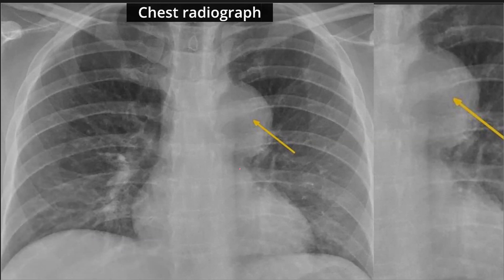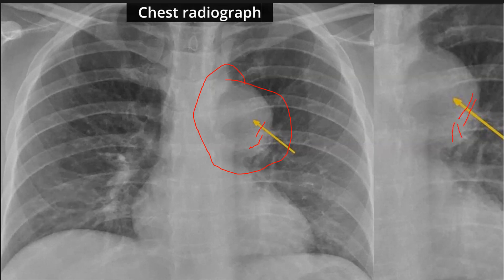As we see here, this is the mass lesion. We can see some vessels passing through the mass, as shown in the magnified view. Because the hilar vessels are seen through the mass, the mass is not in the middle mediastinum — it can be either anterior or posterior.